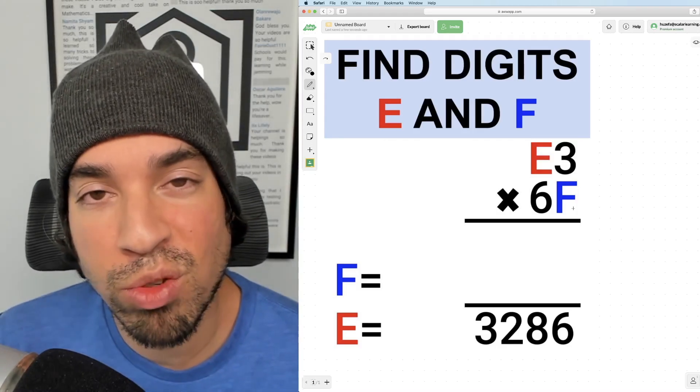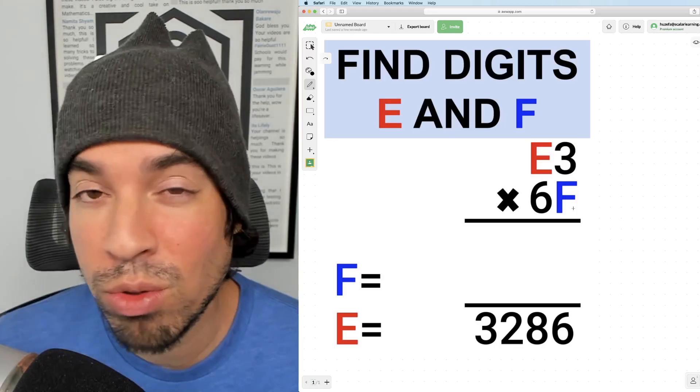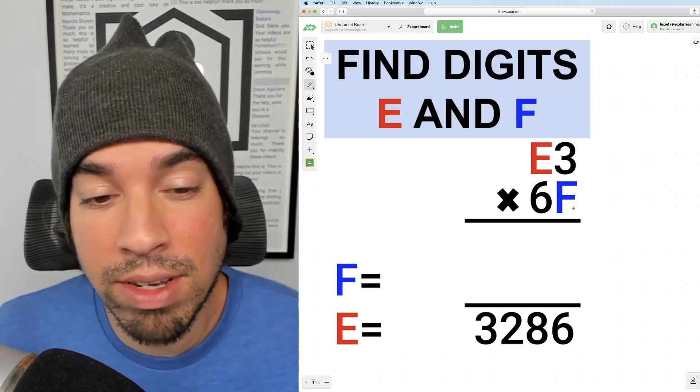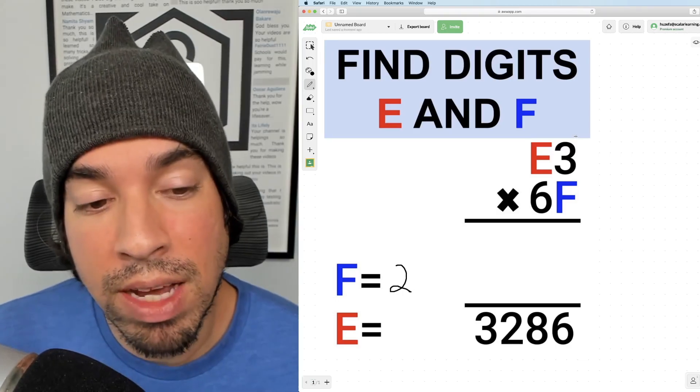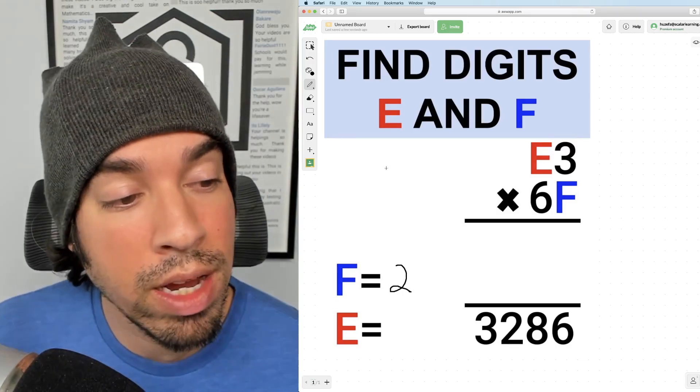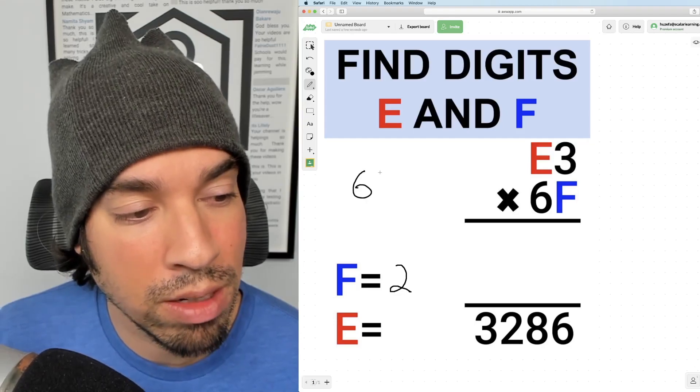So the question is what times 3 gives me 6? And the nice part here is there's only one answer. The only thing that F can be is 2. So now we know that F has to be 2. All we have left now is to figure out what is E. And by the way, that full number now becomes 62.